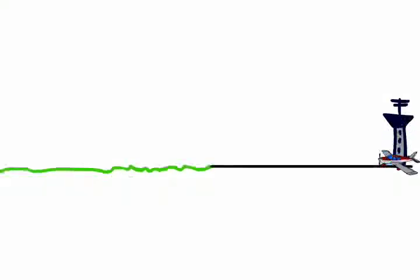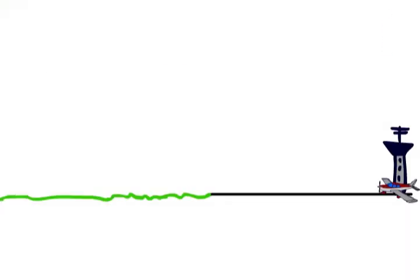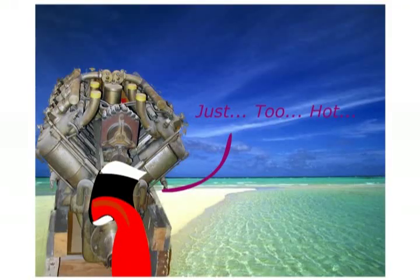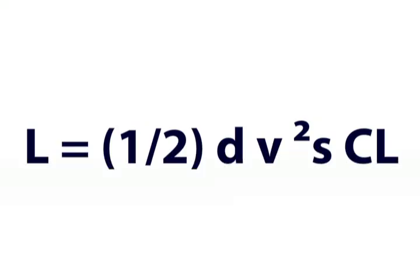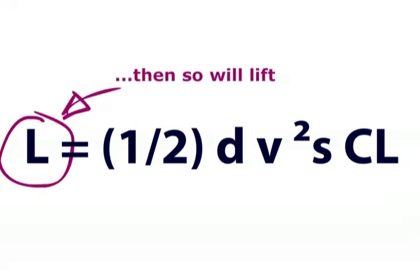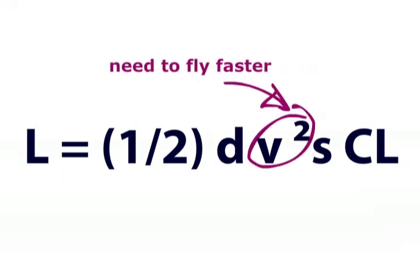A lower air density, which can occur if you are high up, or if it is hot, will cause the engine to produce less power. Air density also features in the lift formula, and as you can see, if the air density decreases, so too will the lift generated, and we must make up for this by flying faster. Both of these effects cause our takeoff run to be increased.